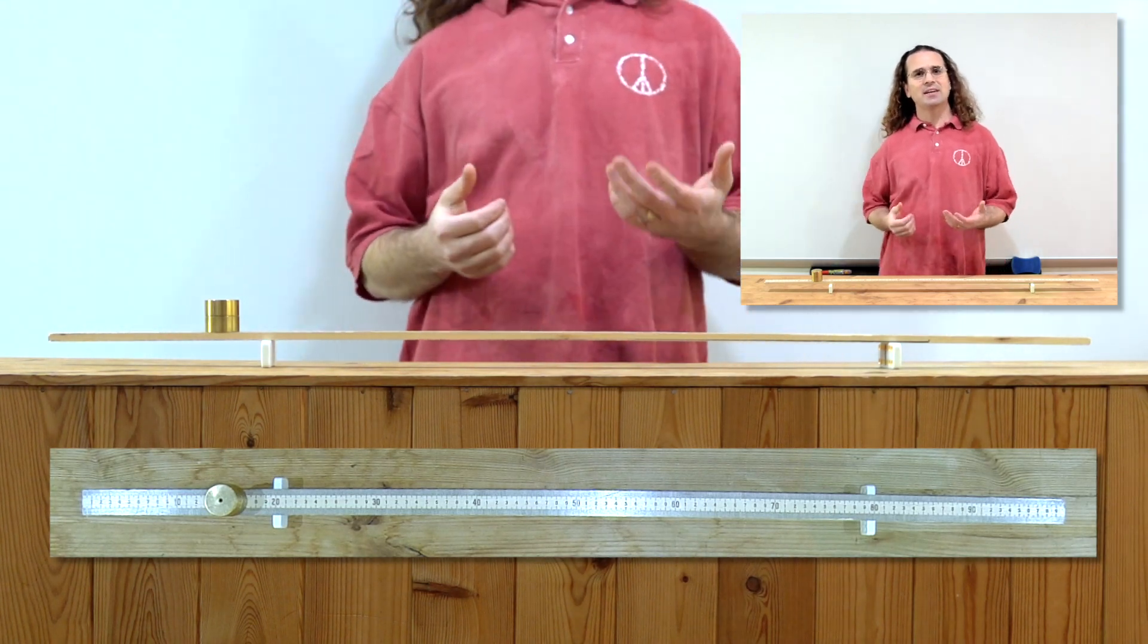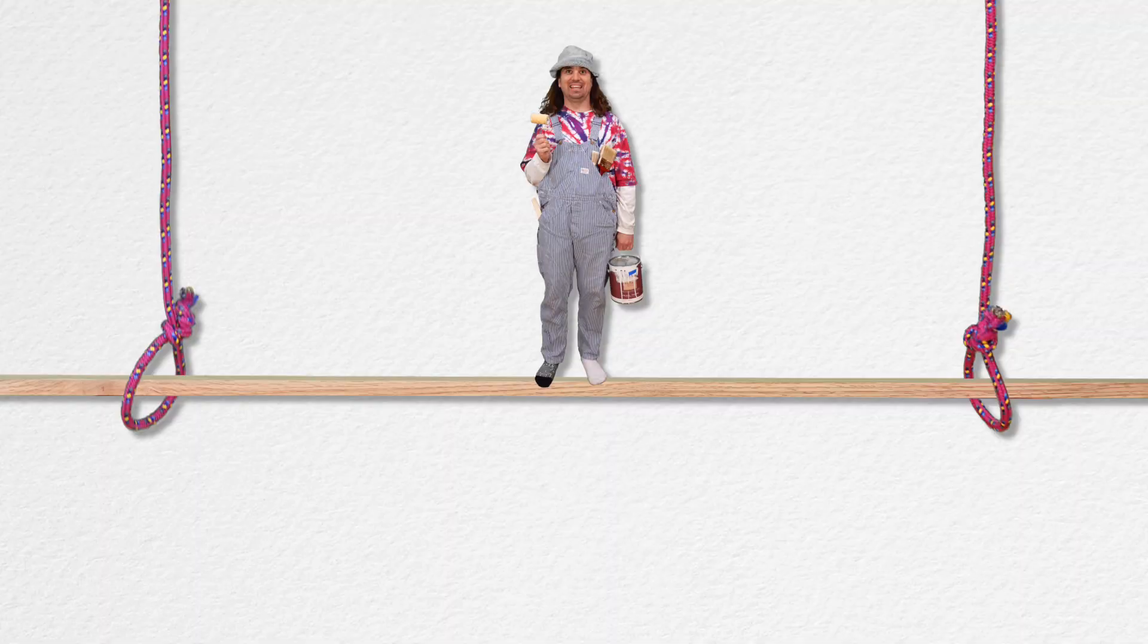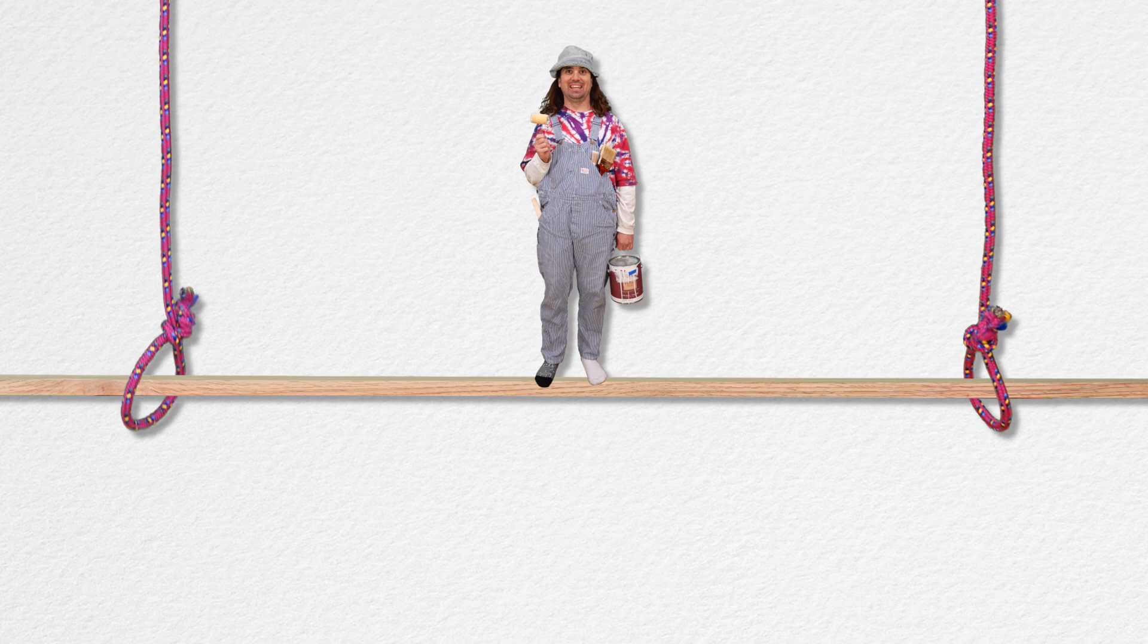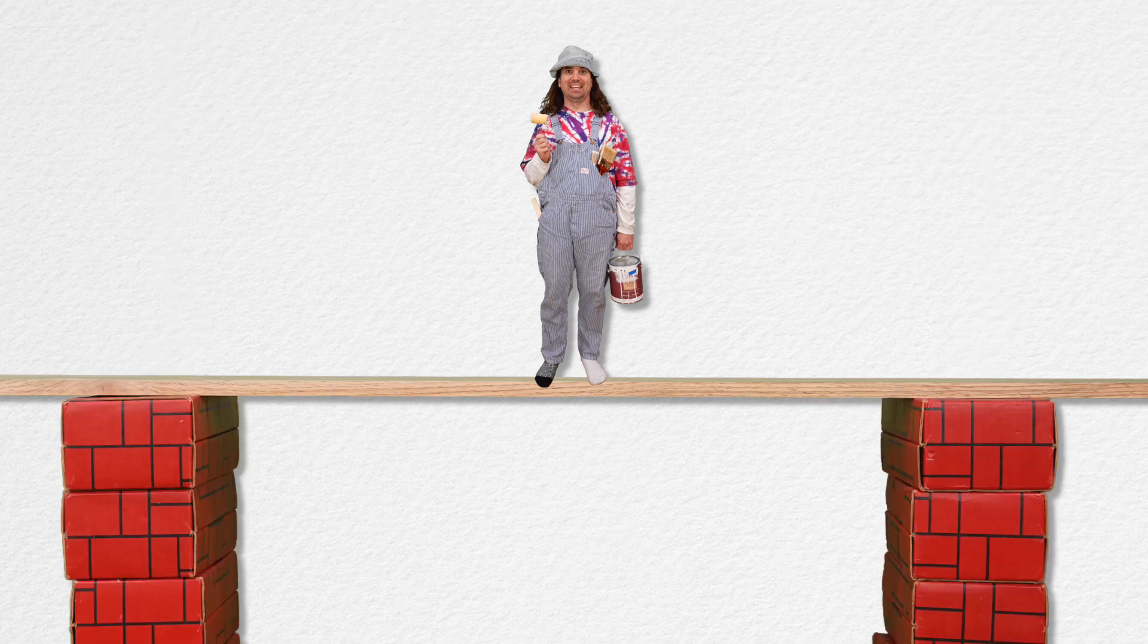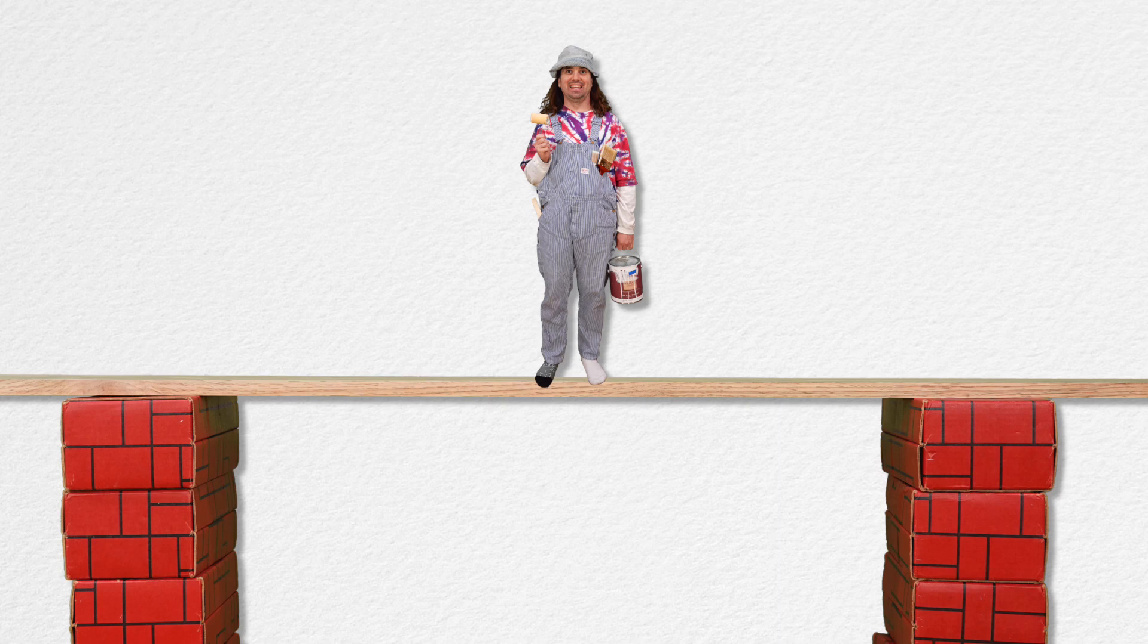Good morning. A typical static equilibrium problem involves a painter on a scaffold supported at two points. Sometimes the scaffold supports are two vertical ropes from above, and sometimes the scaffold supports are two structures holding the scaffold from below. Regardless, the way to solve the physics problem is the same.